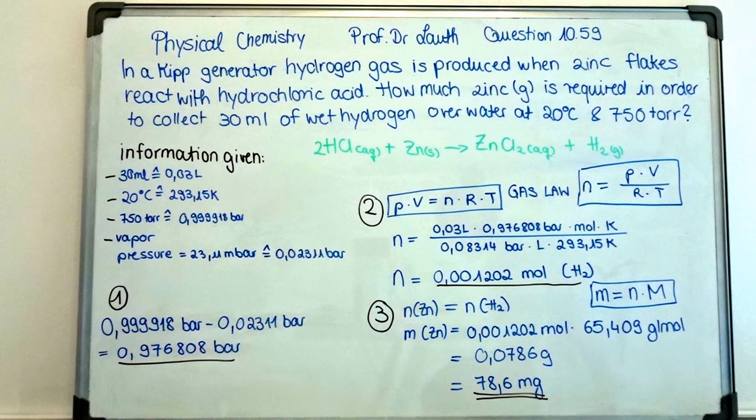Given the formula for the calculation of mass in step 3, we know that the mass of zinc is equal to the amount of substance of hydrogen multiplied by the molar mass of zinc.